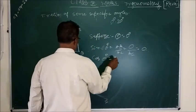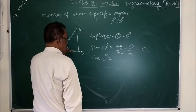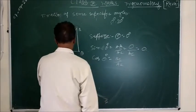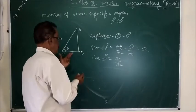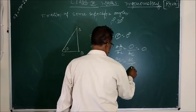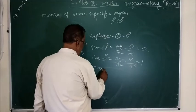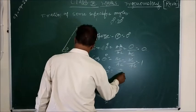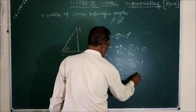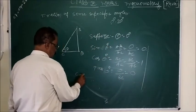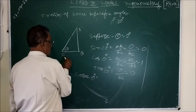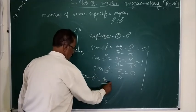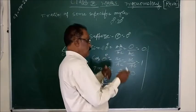Cos 0 degree: cos equals base by hypotenuse, which is BC by AC. Since this is 0 degree, AC will be equal to BC. So BC by BC equals 1. Tan 0 degree: tan equals perpendicular by base. The perpendicular AB is 0, so 0 by BC gives 0. Cosec 0 degree: cosec equals hypotenuse by perpendicular, which is the reciprocal of sin 0. Since sin 0 is 0, cosec 0 will be 1 by 0, which is infinite — it is not defined.